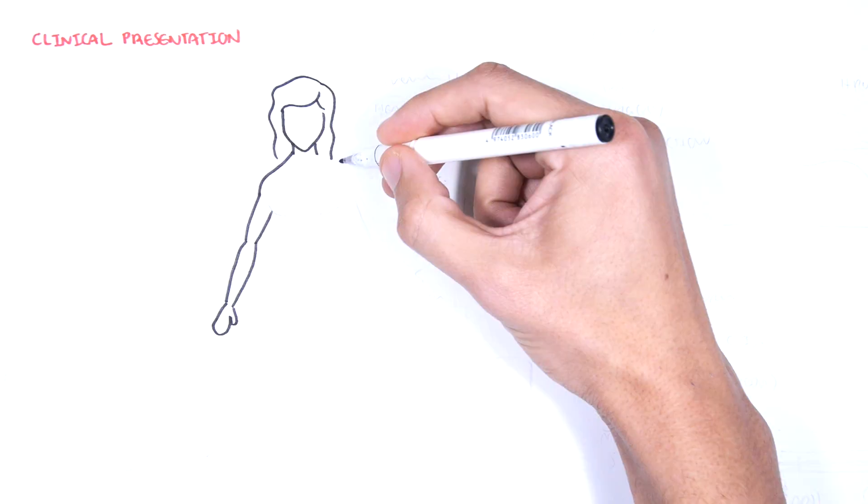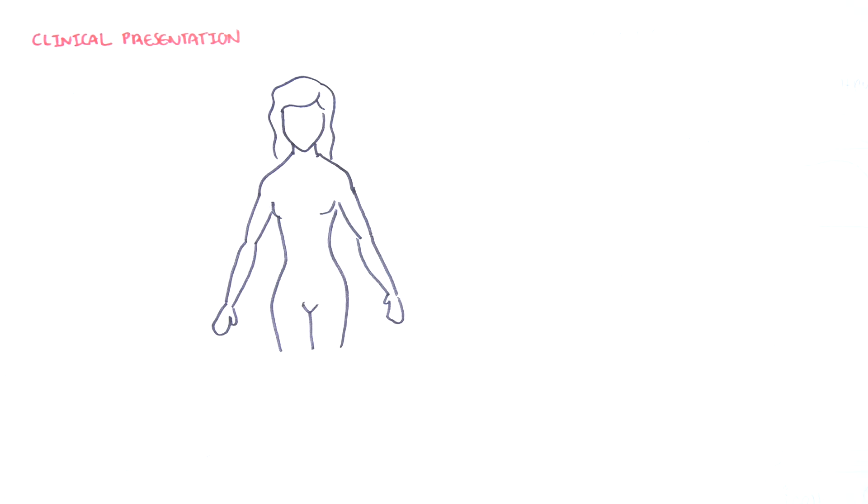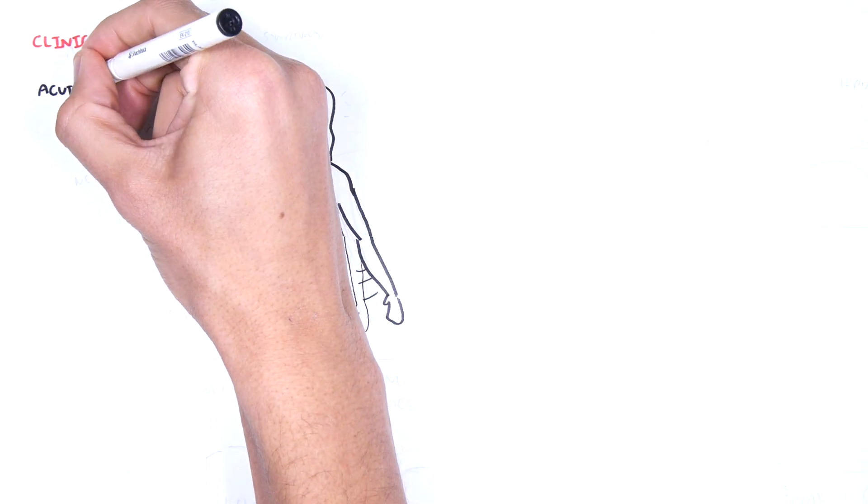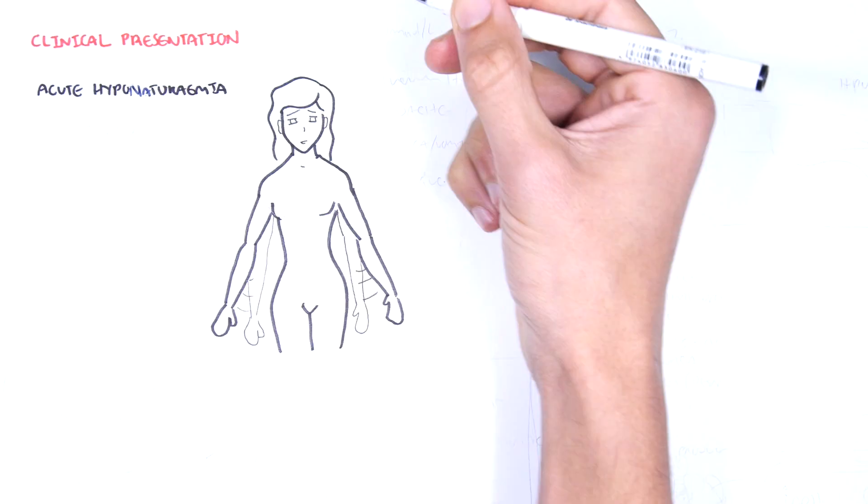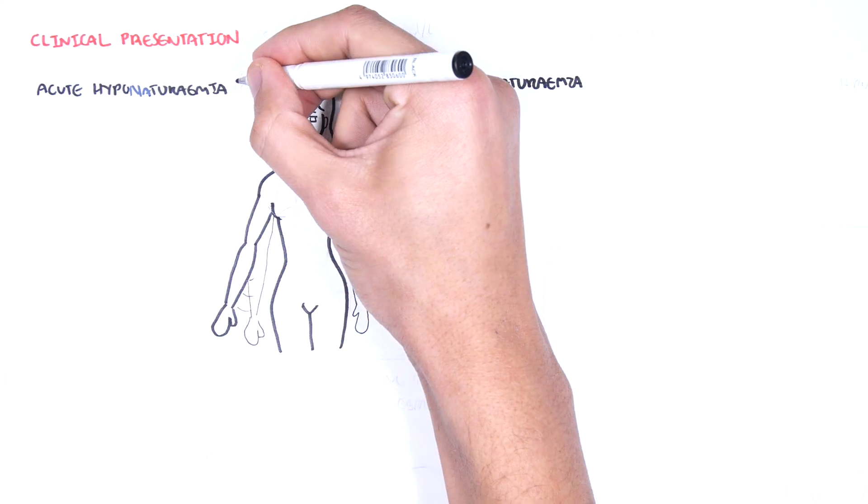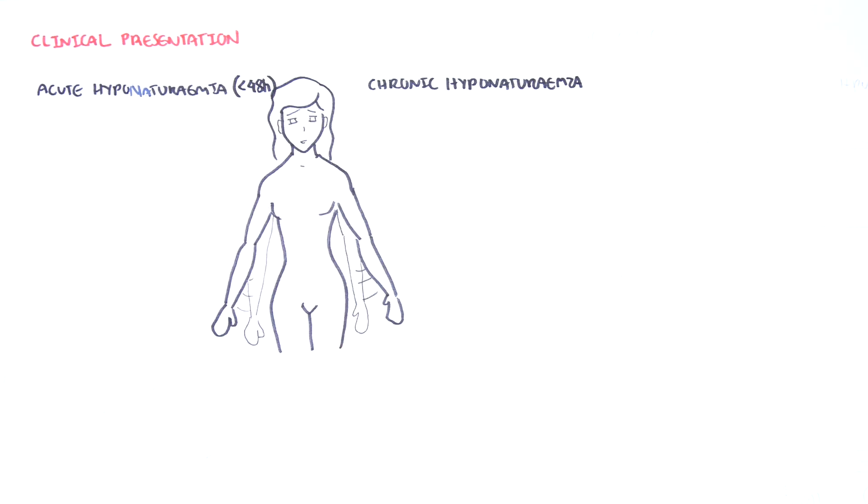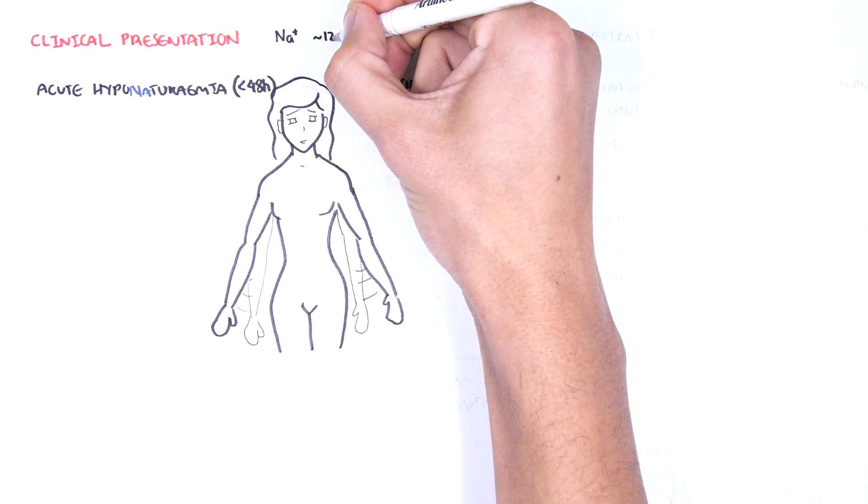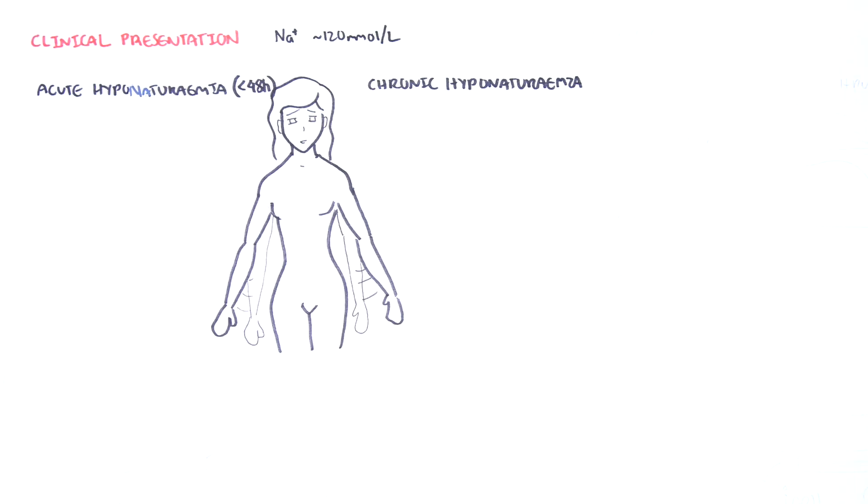The important clinical symptoms and signs of SIADH are related to the low sodium levels in the blood. Now, low sodium levels can be acute or chronic. Acute is defined by hyponatremia occurring less than 48 hours. Severe hyponatremia is defined as serum sodium of about 120 millimoles per liter or less. And this is usually when the symptoms of hyponatremia come up.